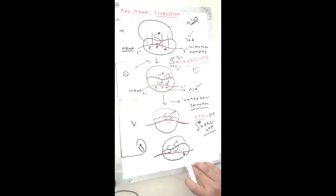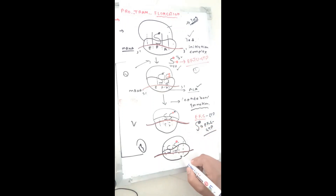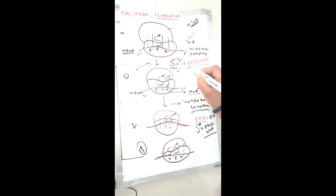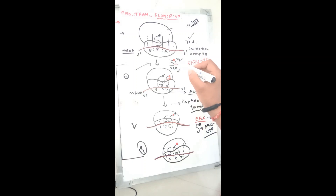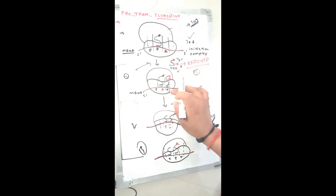The third step is translocation. The tRNA at the A site is now charged with amino acid, while the tRNA at the P site is empty. The empty tRNA shifts from the P site to the E site, and the charged tRNA shifts from the A site to the P site. The elongation factor Tu binds with GTP and brings the charged tRNA to the A site, helping it load there.